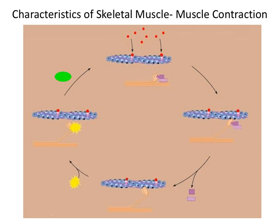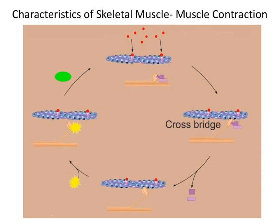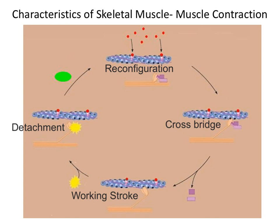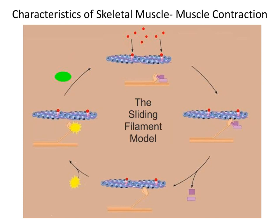We call this final step reconfiguration. The movement of the myofilaments past one another involves the steps: crossbridge, working stroke, detachment, and reconfiguration. This is known as the sliding filament model.